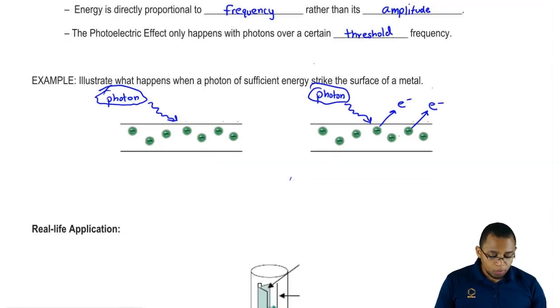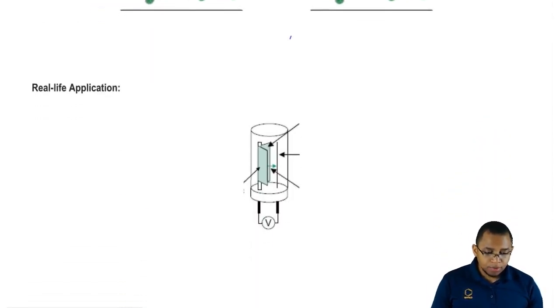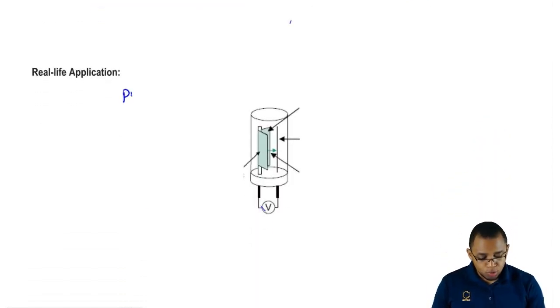Now, how does this work in real life applications? Here's what we have is called a photo tube. This basically puts to practice Einstein's theory of the photoelectric effect.